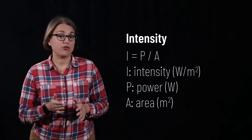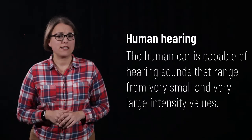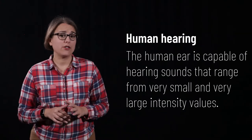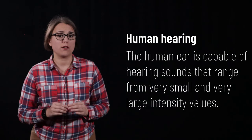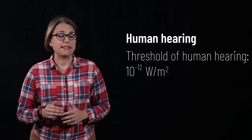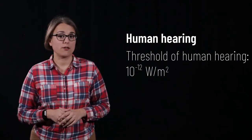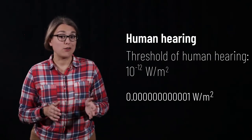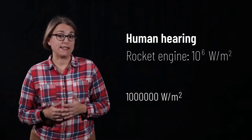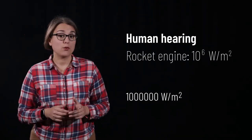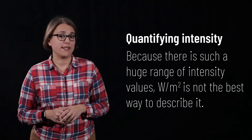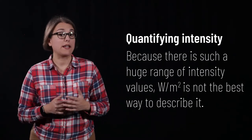The human ear is capable of hearing sounds that are both very quiet and very loud, meaning the values of intensity we can hear range from extremely small to extremely large numbers. The lowest intensity sound a human ear can hear is 10 to the negative 12 watts per meter squared — a decimal point, 11 zeros, and a 1. On the other end, a rocket engine has an intensity of 10 to the 6 watts per meter squared — a 1 with 6 zeros after it. That is a huge range, so using raw intensity values is not the best way to describe sound intensity.